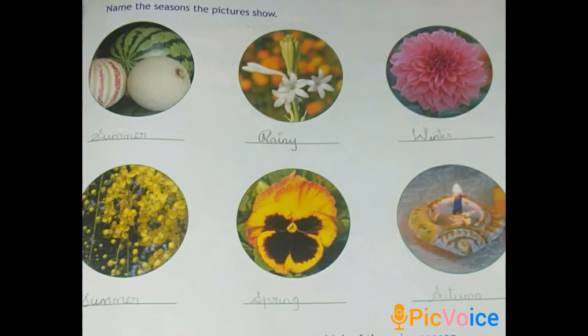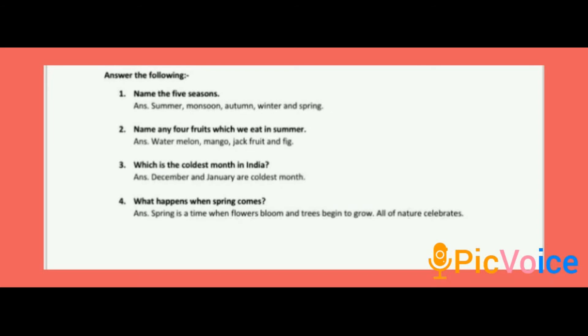Draw and color something that makes you think of the rainy season. Children, you can draw any picture related to the rainy season and color it. Now let's discuss the question answers. Name the five seasons. Yes, they are summer, monsoon, autumn, winter and spring. Second one — name any four fruits which we can see in summer season. Yes, they are watermelon, mango, jackfruit and fig.